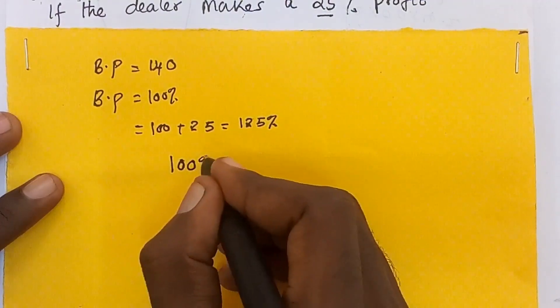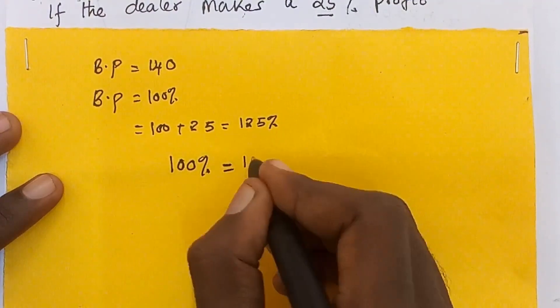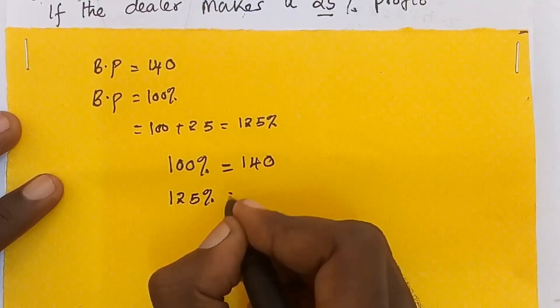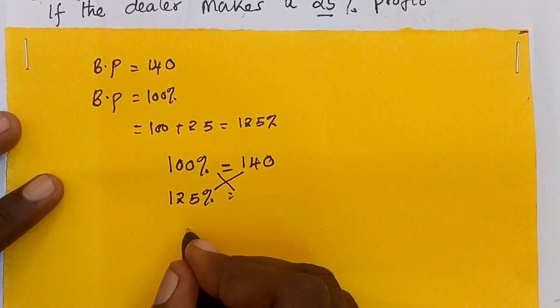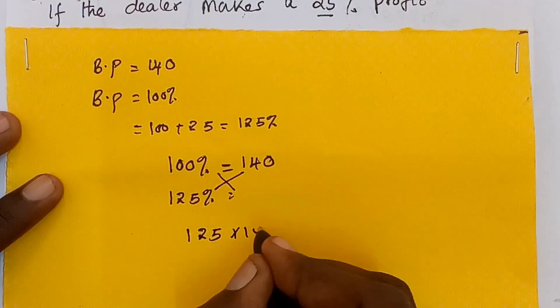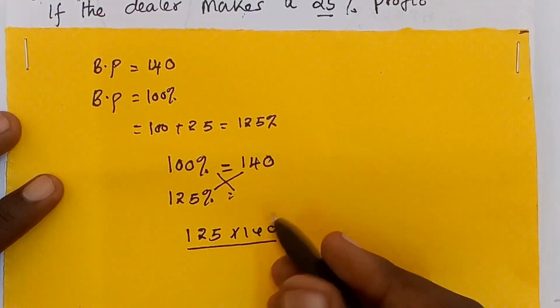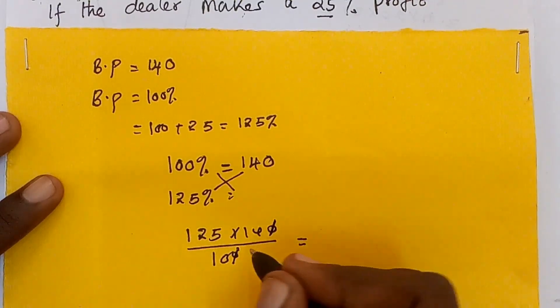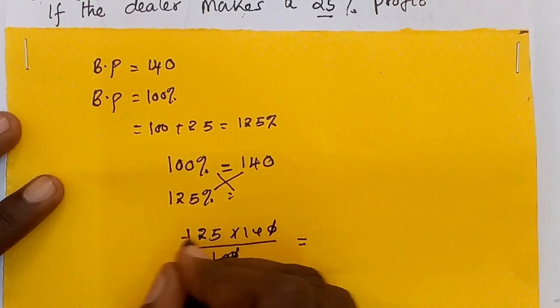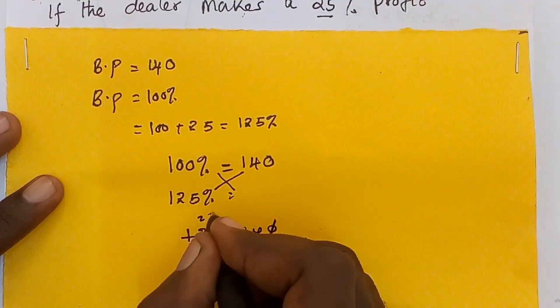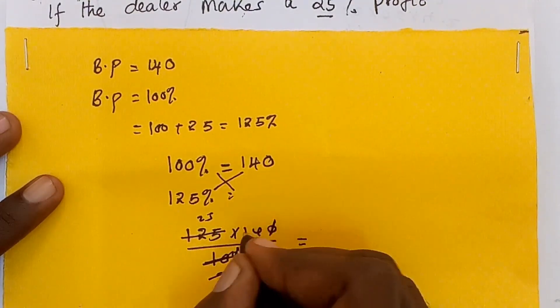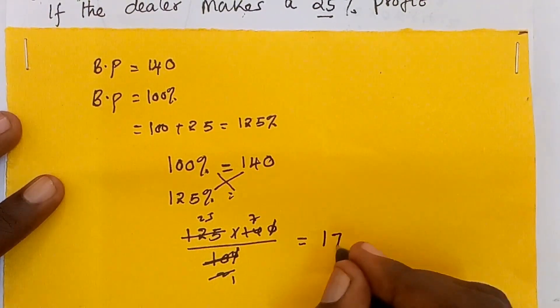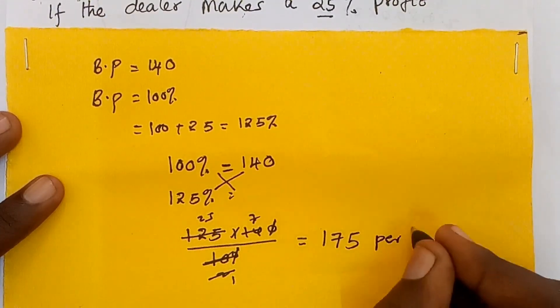Therefore, we say 100% is equal to 140. What about 125%? Then we cross multiply, we say 125 times 140 over 100. And this we get, by 0, 0, by 25, 2, by 5, 25, by 2, 1, by 2, 7. Then we say 25 times 7, we get 175 per liter.